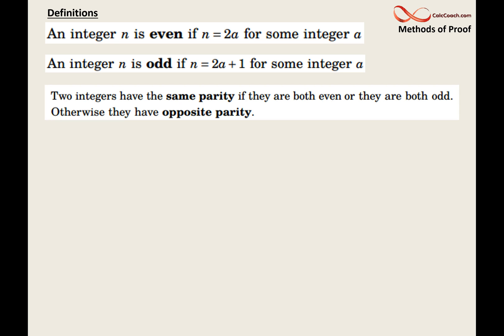And so if you have two integers that are both even or two integers that are both odd, then they have the same parity. And then if one is even and one is odd, they have opposite parity.